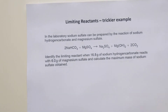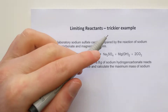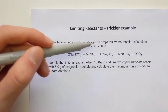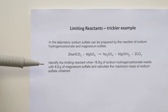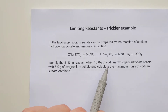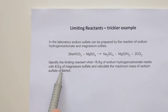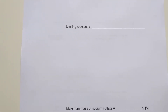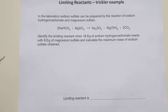Moving on to the right-hand side of the handout - still the same type of calculation, but this is a trickier example. The key thing that makes it trickier is that the ratio is not all one-to-one-to-one; it's a two-to-one ratio of the reactants. The information given is 16.8 grams of sodium hydrogen carbonate and 6 grams of magnesium sulfate. The question is more structured - it asks you to work out the limiting reactant first, then work out the mass of sodium sulfate at the end.